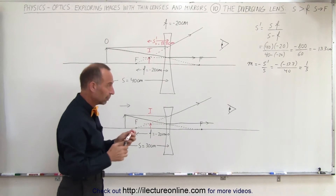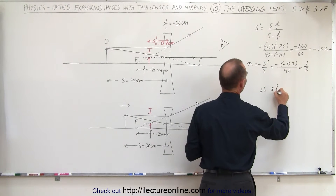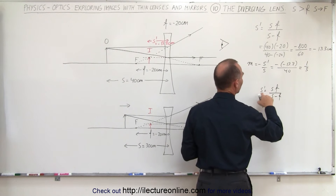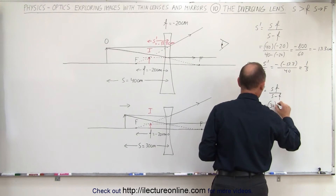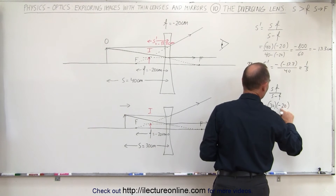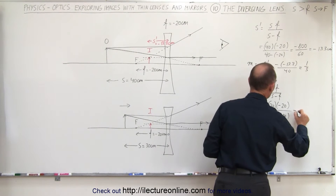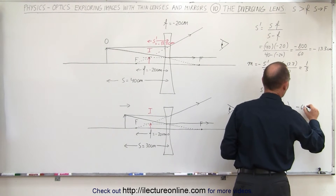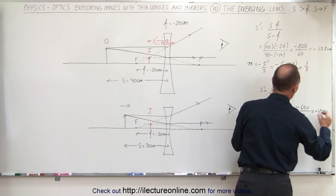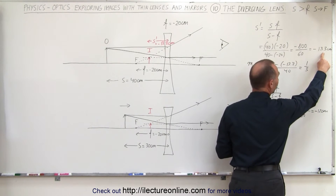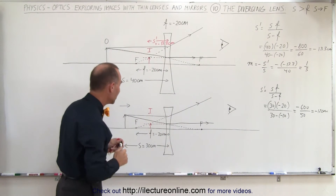To find the position of the virtual image, we use the equation S' = SF / (S − F). The object distance is 30 centimeters and the focal length is minus 20 because it's a diverging lens. So S' = (30 × −20) / (30 − (−20)) = −600 / 50 = minus 12 centimeters. Notice: from a distance of minus 13.3 centimeters, the image has now moved closer to the lens — it's only 12 centimeters away.